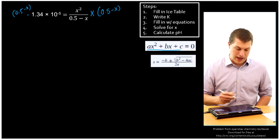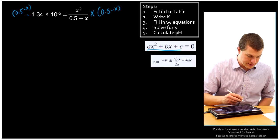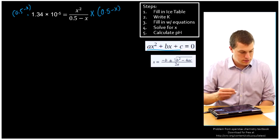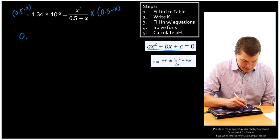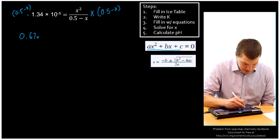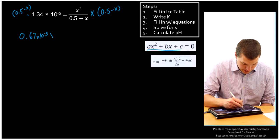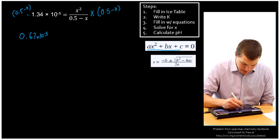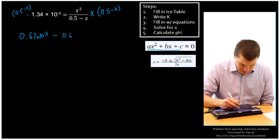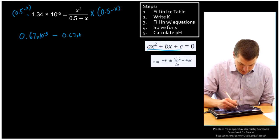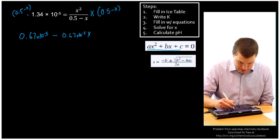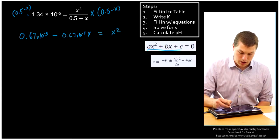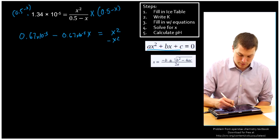And when we do that, what we're going to get on the left-hand side is 0.67 times 10 to the minus 5, or I'm sorry, just without X for the first time. And then minus 0.67 times 10 to the minus 5, now there's an X, is equal to X squared. So all we've got to do, last step to get it all equal to 0, is subtract X squared from both sides.